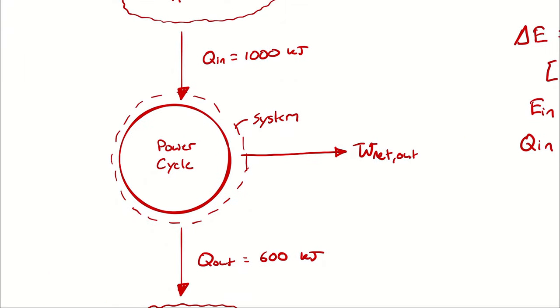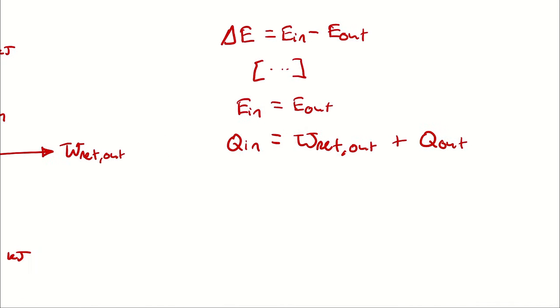So if 1,000 kJ enters, 600 kJ leaves as heat and the rest leaves as net work out. The difference between 1,000 and 600 must be how much work left as net work out.